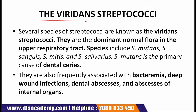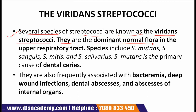Next is the viridans streptococci. Several species of streptococci are known as the viridans streptococci. They are the dominant normal flora in the upper respiratory tract. Species include streptococcus mutans, streptococcus sanguis, streptococcus mitis and streptococcus salivarius. Streptococcus mutans is the primary cause of dental caries.